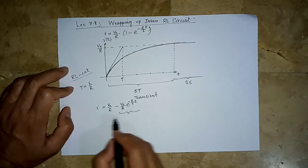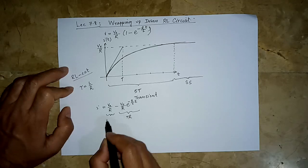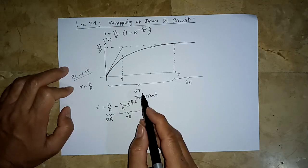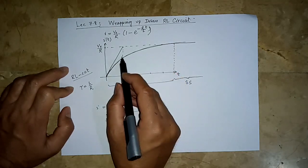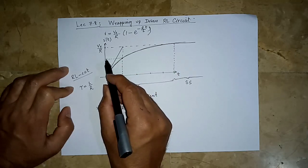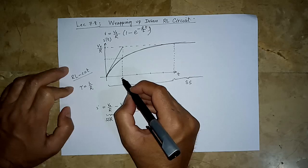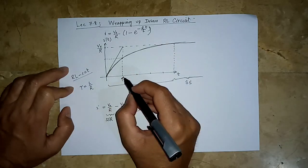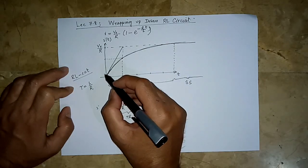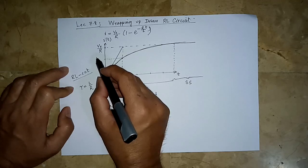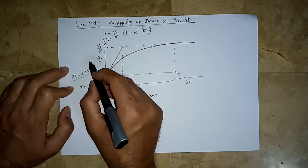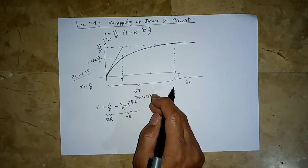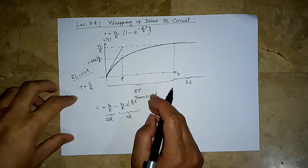This is the steady-state part. And this can tell you the same story that we understood from the natural response part earlier. So in one time constant, because here it is not decaying to 0 but going to saturate to some value, in one time constant, whatever is the final saturation value, this function is going to rise to 63.2% of that value. Basically, it is the same story.